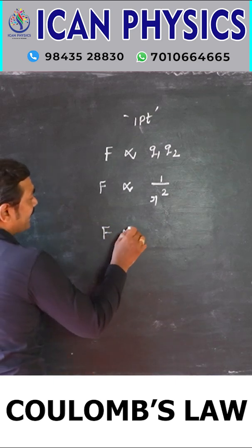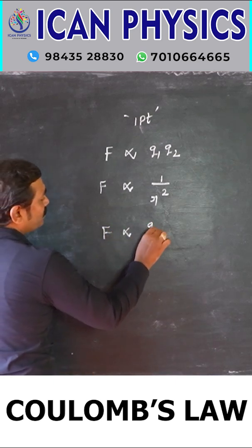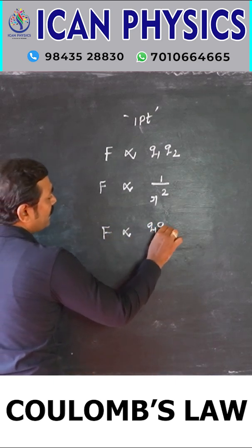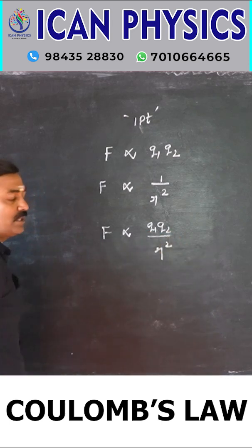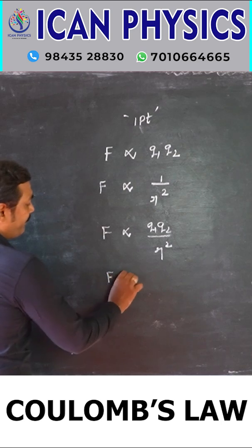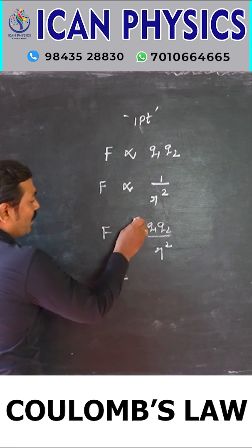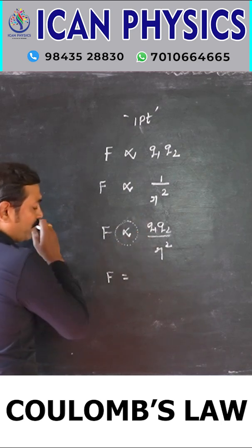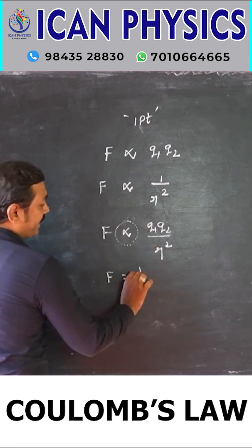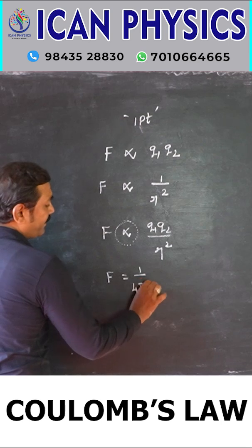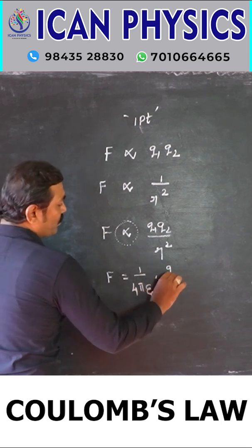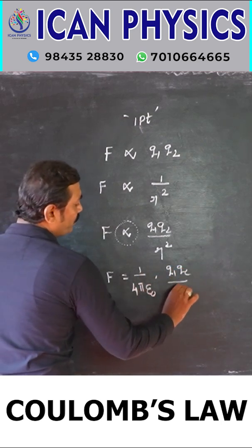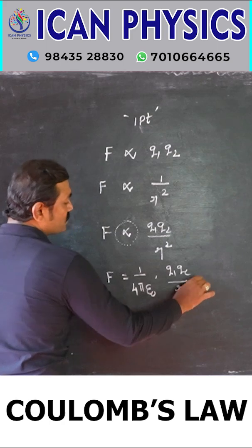So F is directly proportional to Q1 and Q2, and inversely proportional to the square of the distance. So F equals — removing the proportional sign — we add the constant 1 over 4πε₀, times Q1 times Q2 over R squared.